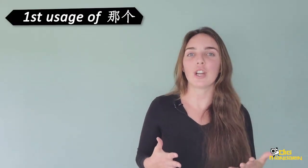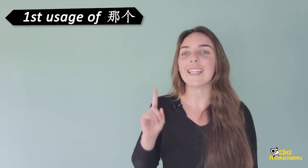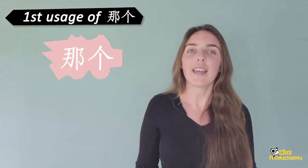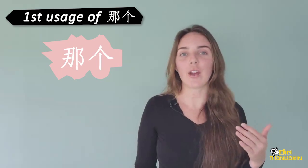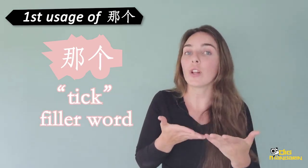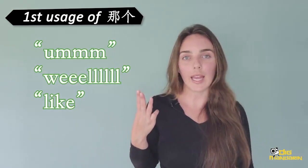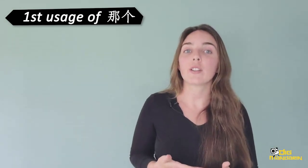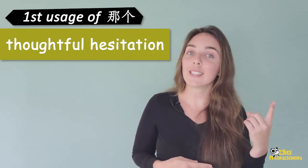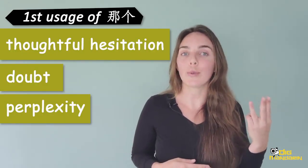Let's look at the first usage of na ge, the ee ge. Na ge is best described as a tick or filler word. It can fill in space. In English, we use um, well, like as a way to interject or to express thoughtful hesitation, doubt, or perplexity.